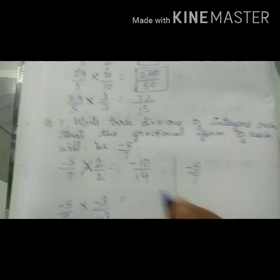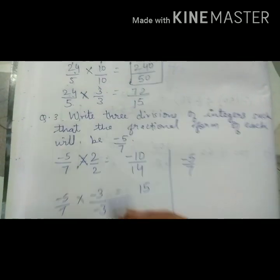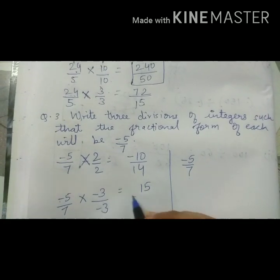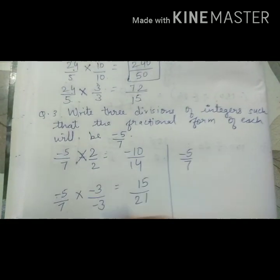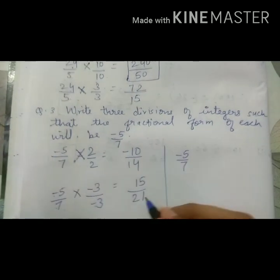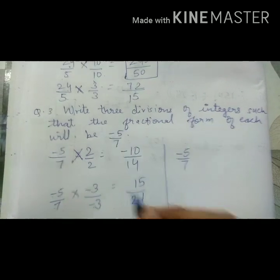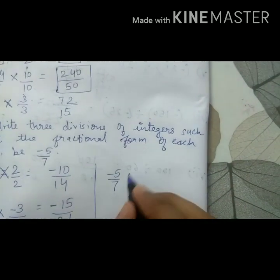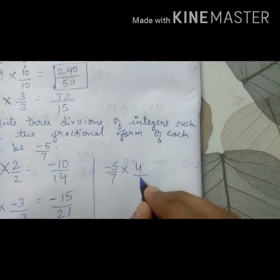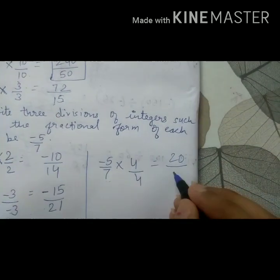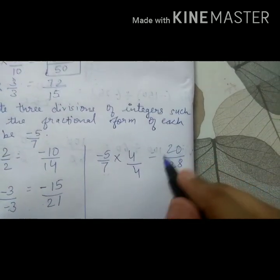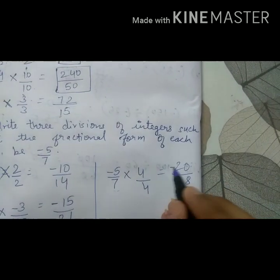5 threes are 15, negative negative positive, 7 threes are 21. Positive negative negative. So we won't be putting negative sign here, we are writing here. After 3, I am taking 4. 5 fours are 20, 7 fours are 28. Negative positive negative.